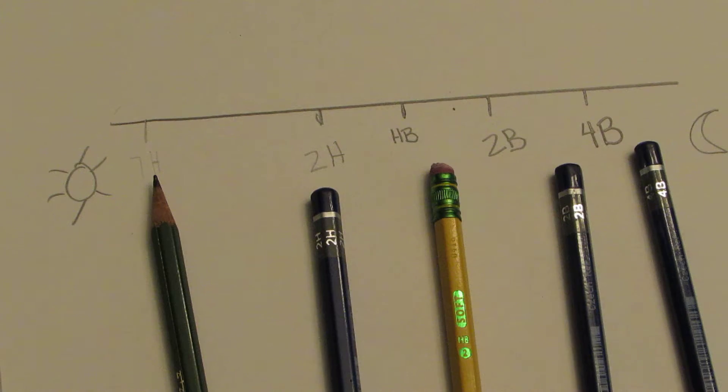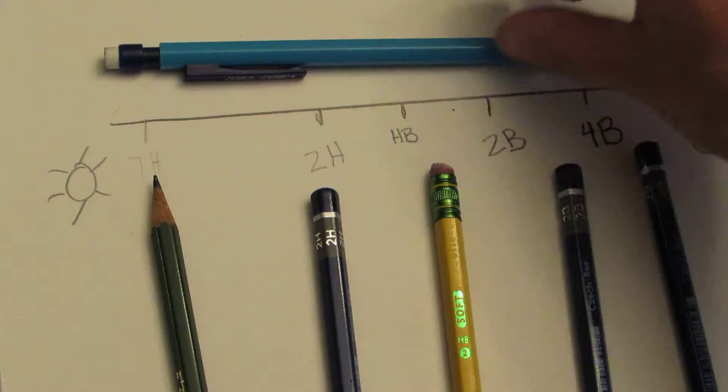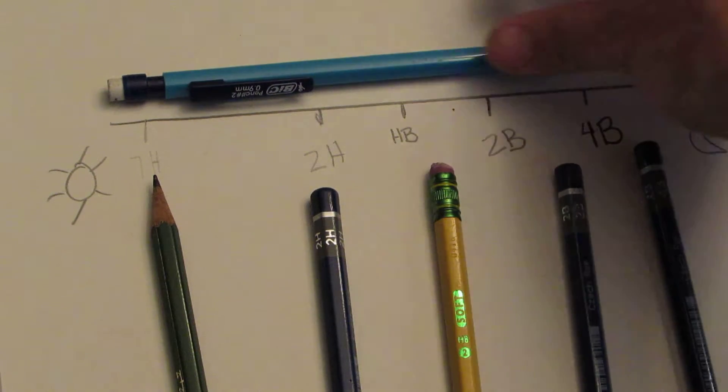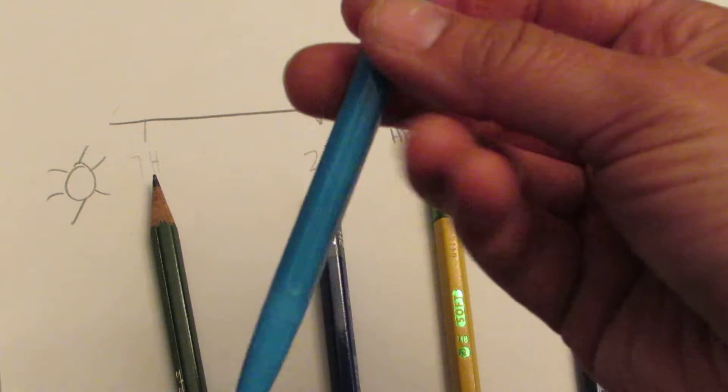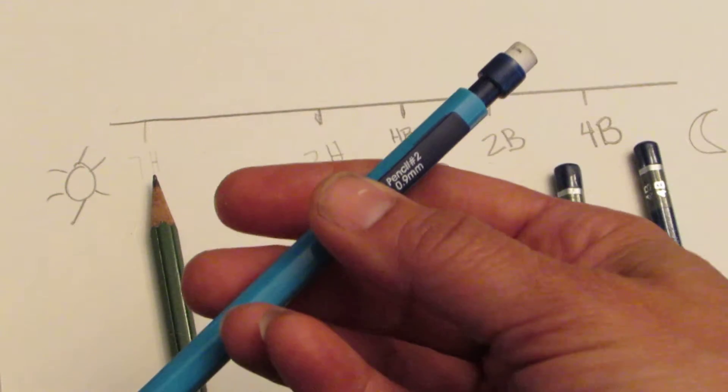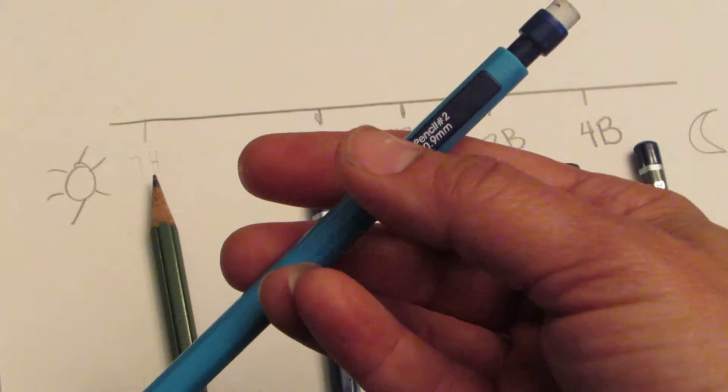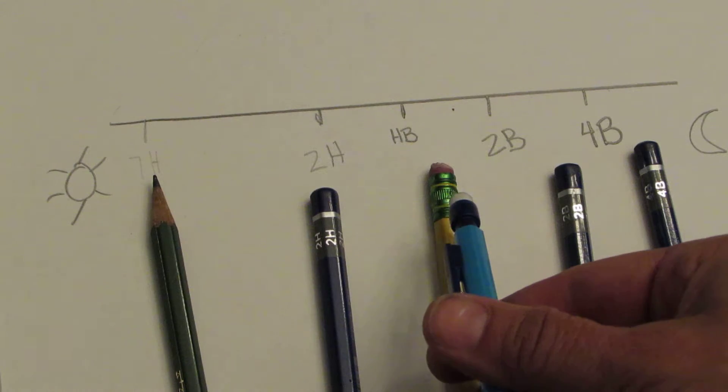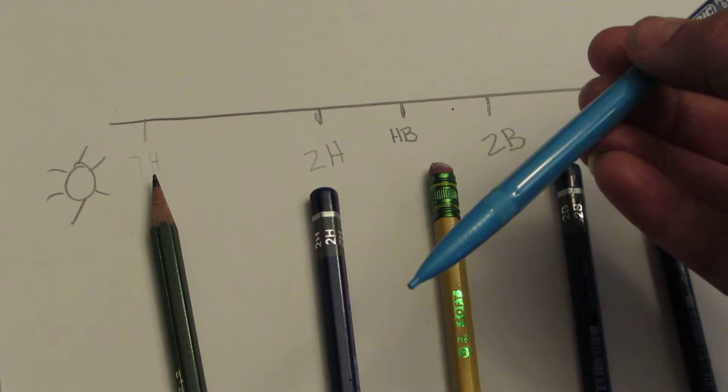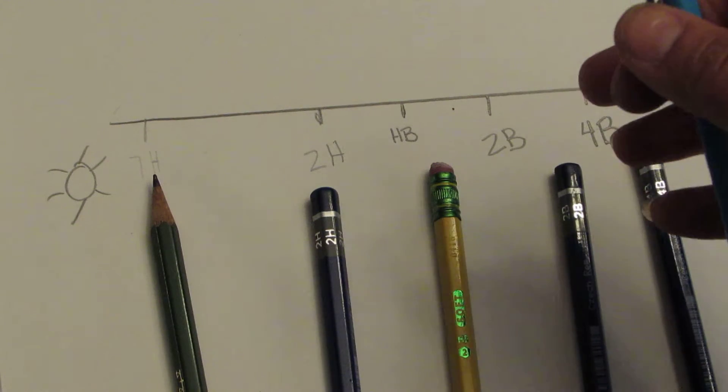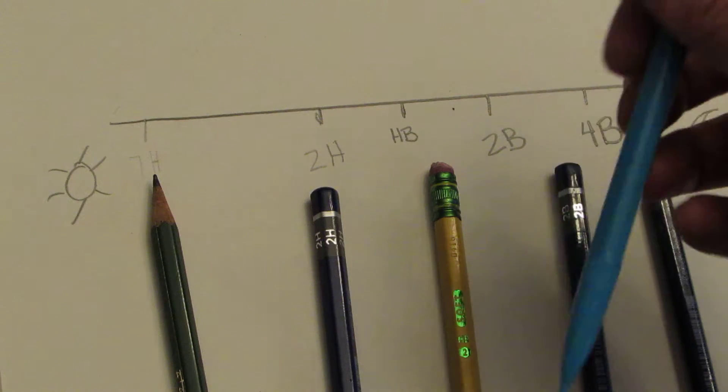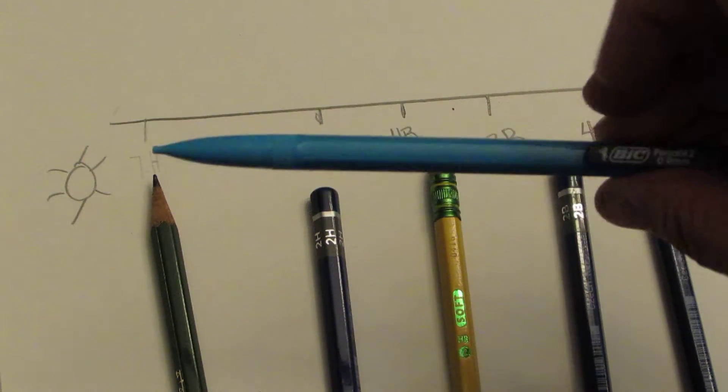Now you might be wondering, okay, so where does a mechanical pencil belong in my shading packet? Well, here's where I believe mechanical pencil belongs: it does not go well on shading. A mechanical pencil is technically the same as an HB pencil, but the lead, with it being so small, a lot of times instead of blending, it looks really streaky.